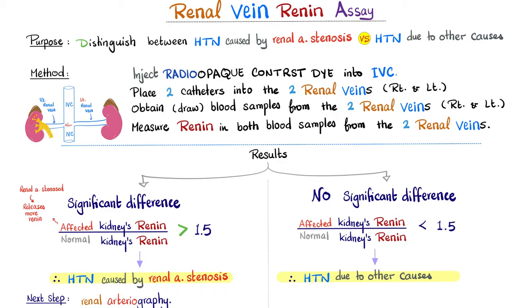When a kidney secretes renin, it goes into the renal vein, so you can compare renin from the right versus left kidney. If there is a significant difference — the stenosed kidney shows much higher renin because it senses hypoperfusion — and the ratio of affected to normal kidney renin is greater than 1.5, this proves the hypertension is caused by renal artery stenosis.